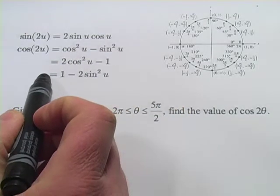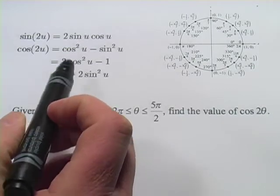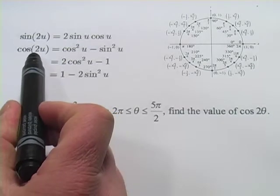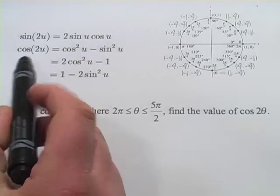For the cosine there's actually some choices which is pretty nice because you can choose the one that's easiest to calculate. The double angle of a cosine, so cosine 2u,